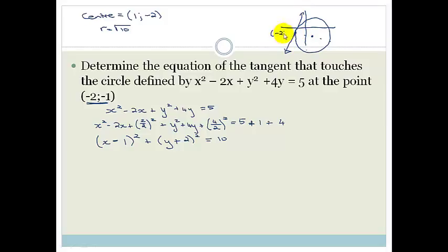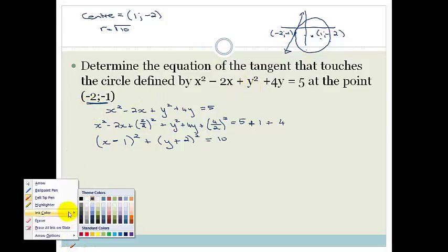This point here is minus 2, minus 1. This point here is 1, minus 2. And we want to know the equation of this tangent. We want to know the equation of this tangent. So do you agree this equation of a tangent is a straight line equation? So let's just change color because now we're going to do the equation of the tangent.